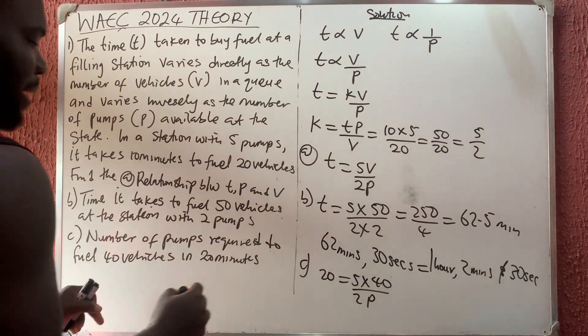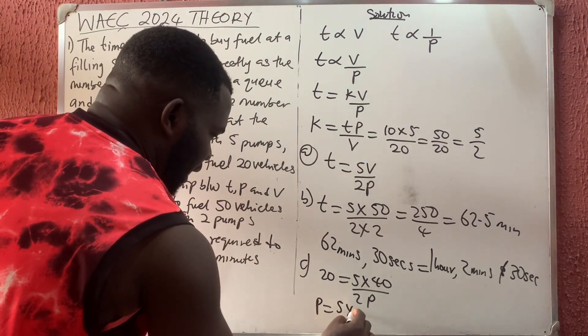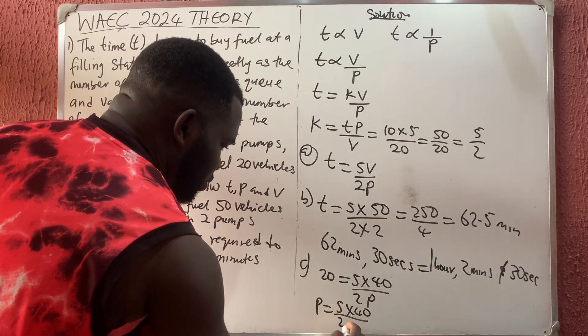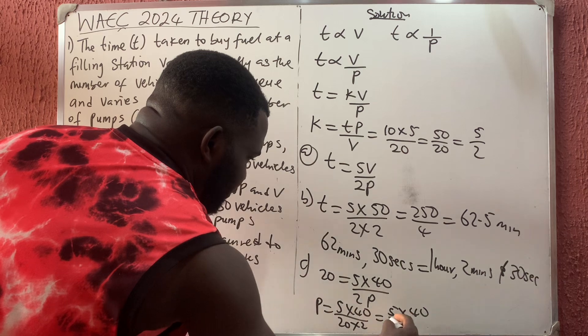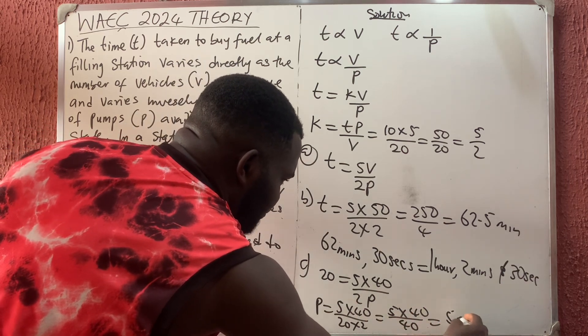If I cross multiply, I'm going to have that p will be 5 times 40 divided by 20 times 2, which is 5 times 40 divided by 40, which means five pumps.